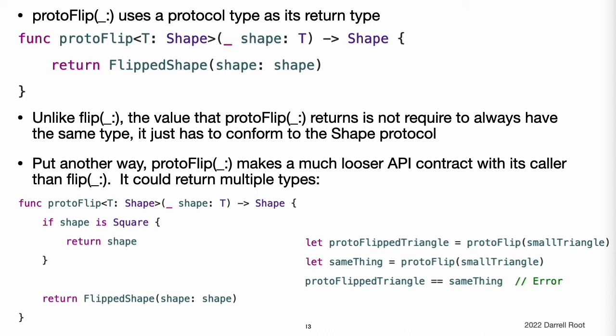The less specific return type information from ProtoFlip means that many operations that depend on type information are not available on the return value. For example, it is not possible to write an equal-equal operator comparing results returned by this function. The error on the last line of this example occurs for several reasons. The immediate issue is that shape does not include an equal-equal operator as part of its protocol requirements. If you try adding one, the next issue is that the equal-equal operator needs to know the types of its left-hand and right-hand arguments. This sort of operator usually takes arguments of type self, matching whatever concrete type adopts the protocol, but adding a self requirement to the protocol does not allow for the type erasure that happens when you use the protocol as a type.